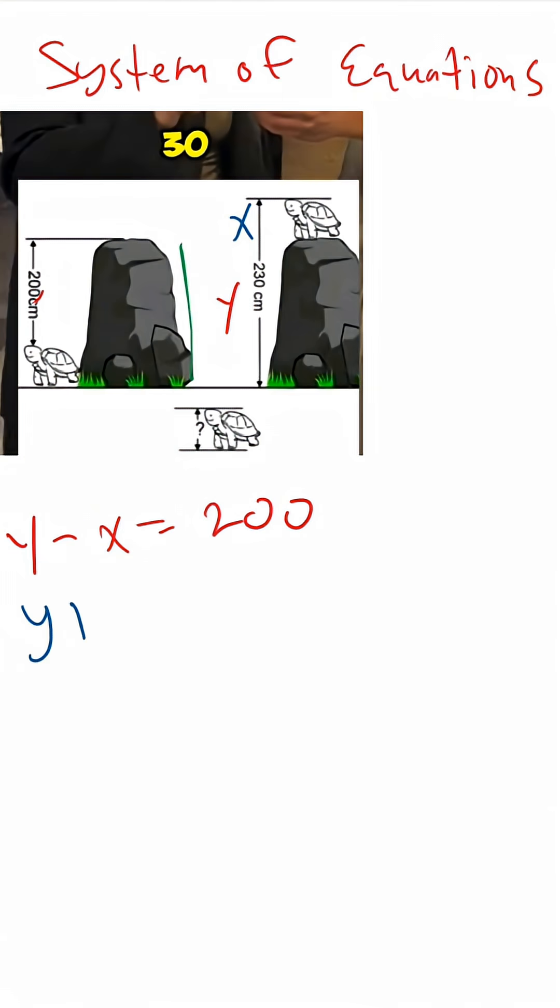So I'm going to just say Y plus X equals 230. If we take a look here, when we try to put these together, we'll see that the minus X and the plus X are going to cancel out. Y plus Y is just 2Y. And then over here we have 200 plus 230, which is going to give us 430.